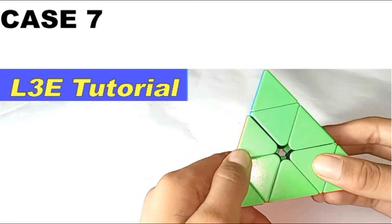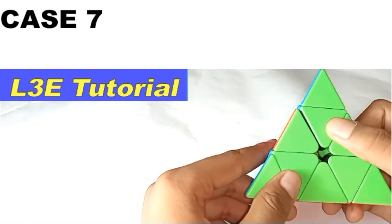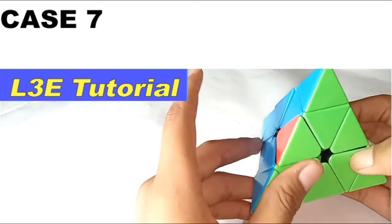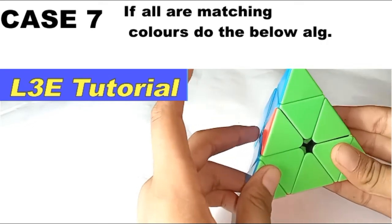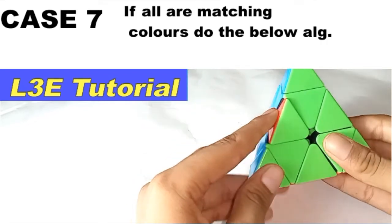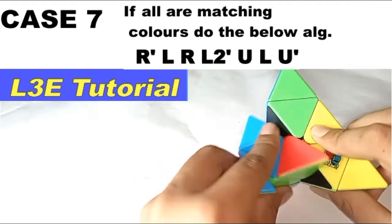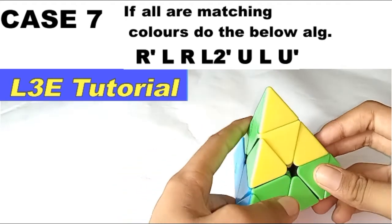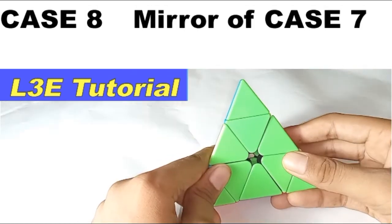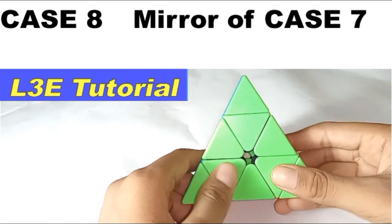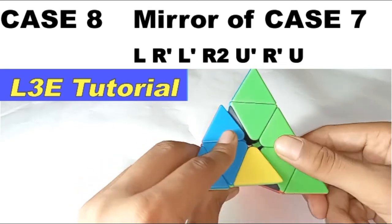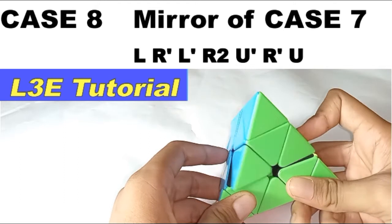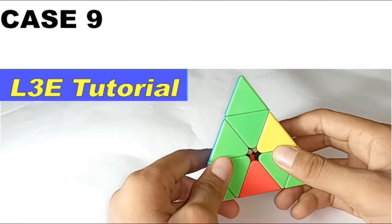Now for this case, all the colors are matched like this. You see where the bottom color is - is it on the left or right? If it is on the left, you simply do this algorithm like this. And if it is on the right, you simply do the left version of the algorithm like this.